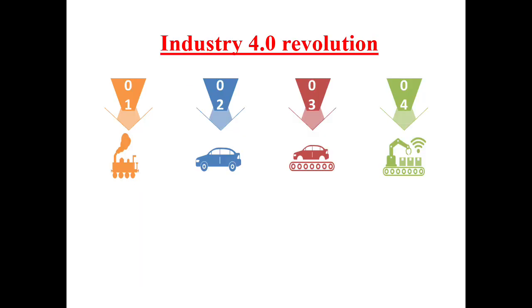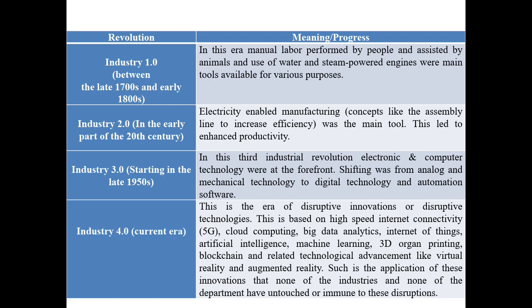The next topic is Industry 4.0 Revolution, which comes after Industry 1, 2, and 3. This is the progression of various industrial developments. Industry 4.0 is the latest way of industrialization and is becoming possible because of AI, high-speed internet, machine learning, cloud computing, and quantum computing. It is the era of disruptive technologies based on 5G connectivity, big data analytics, Internet of Things, artificial intelligence, machine learning, 3D organ printing, blockchain, virtual reality, and augmented reality.